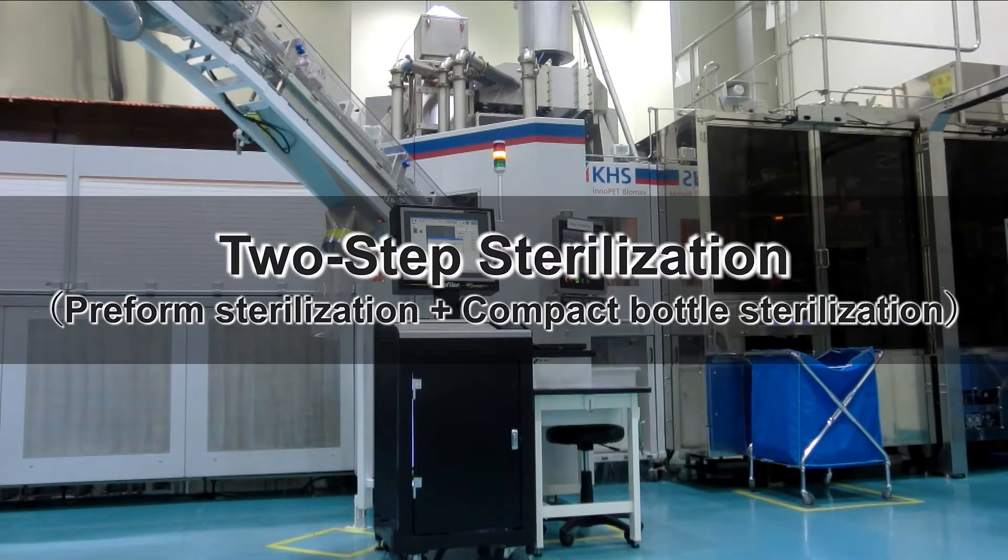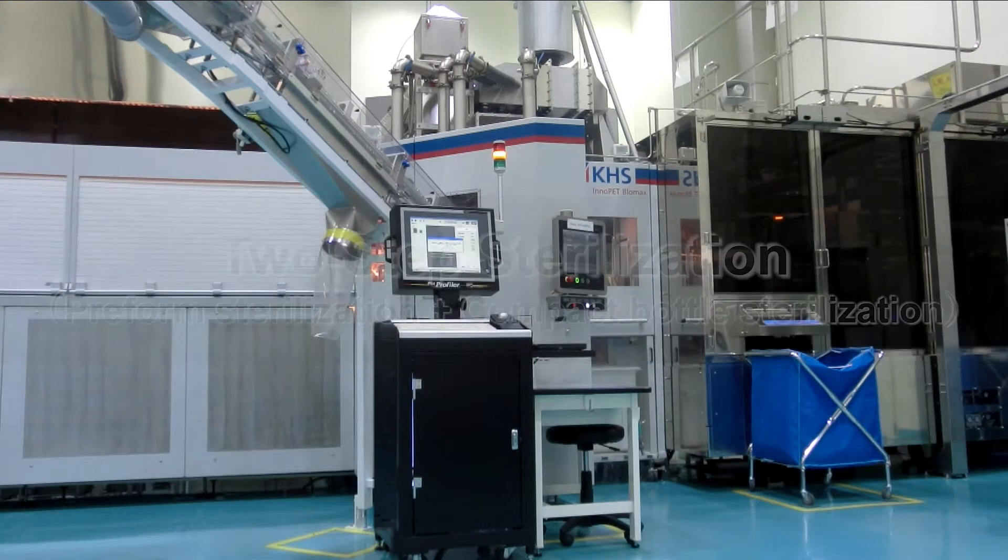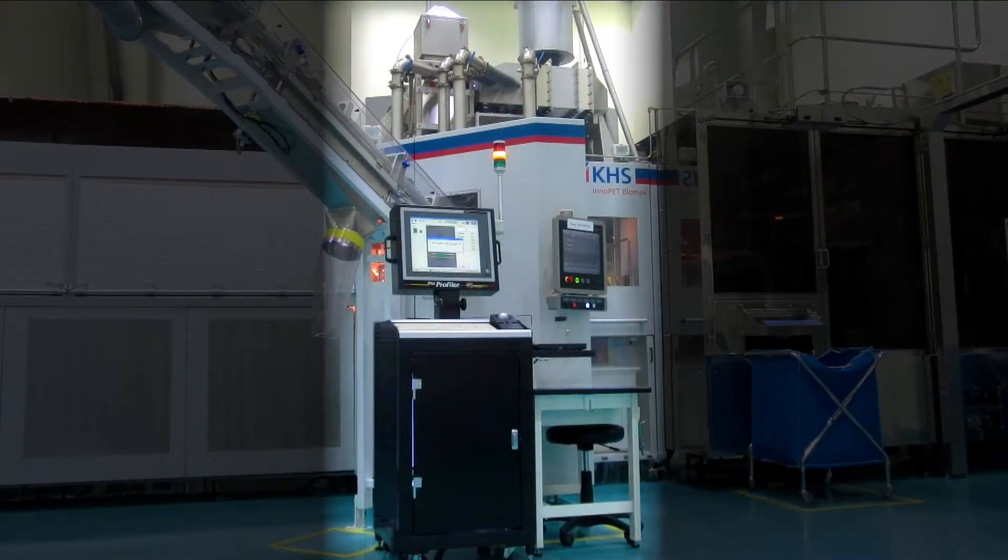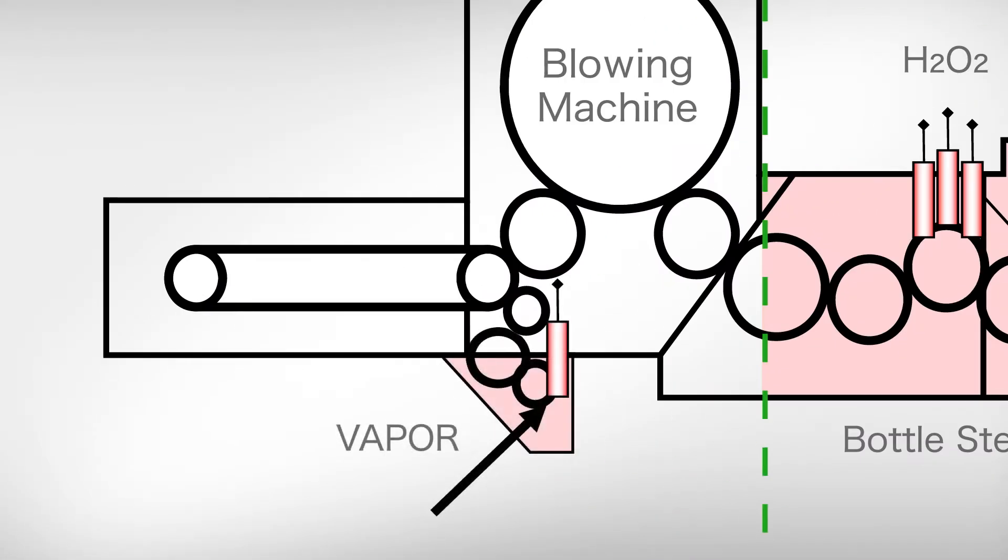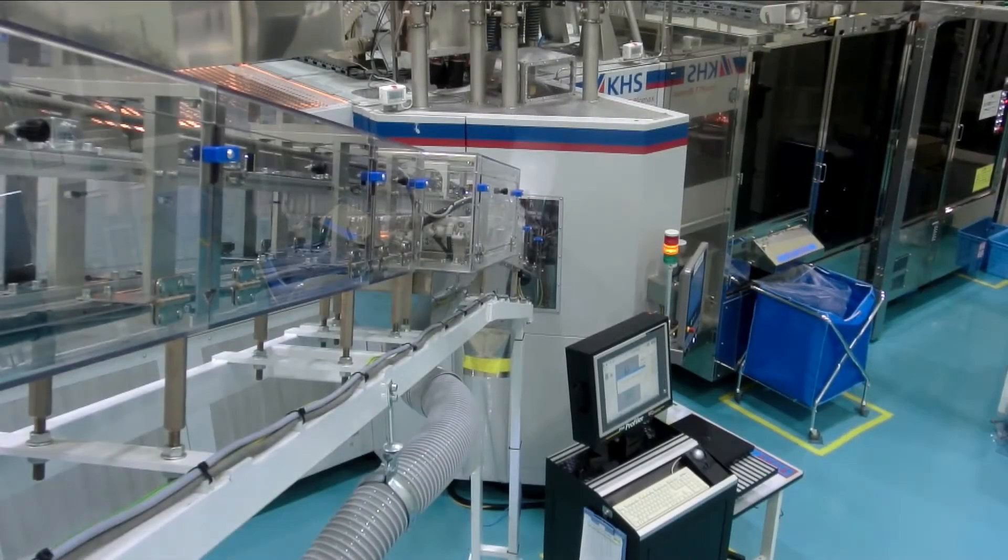A new proposal for the PET plastic bottle aseptic filling system is preform sterilization. This is done by a compact sterilization unit consisting of two wheels, located where the preforms enter the blowing machine.